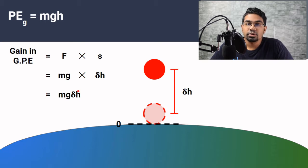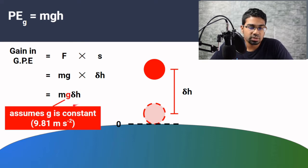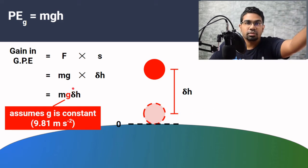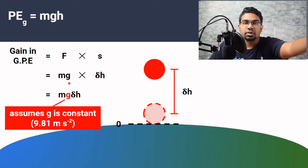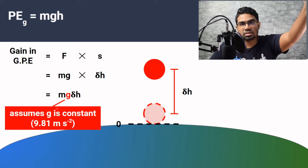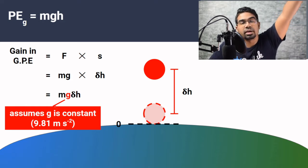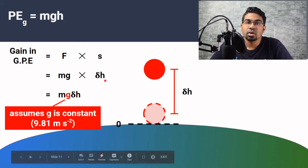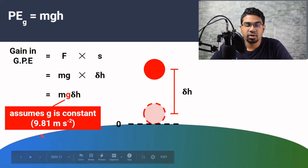One key point to note is that whenever we use E equals mgh, we use 9.81 for the value of g, and this is only true when the object is near the surface of the earth. As the object moves further and further away from the earth, the gravitational field is going to be weaker, so the gravitational force of attraction is weaker and g will drop. We can only use this formula when doing calculations for objects close to the surface of the earth, where gravitational acceleration is constant or nearly constant.